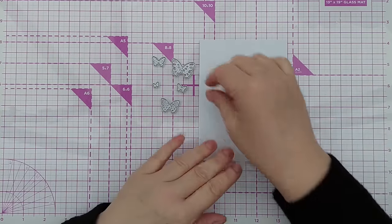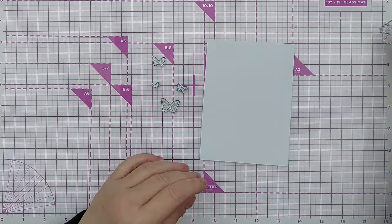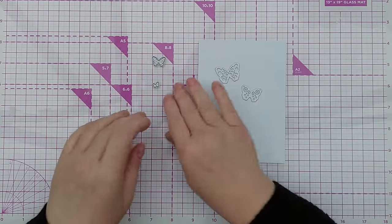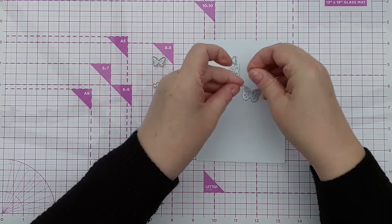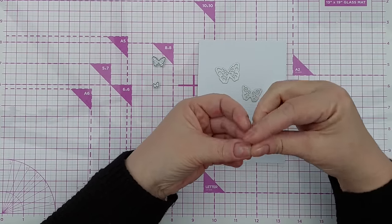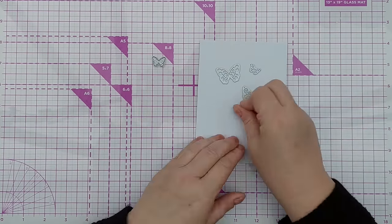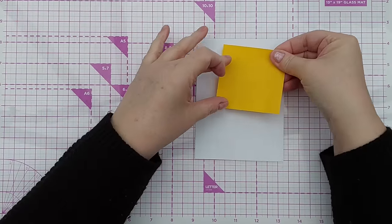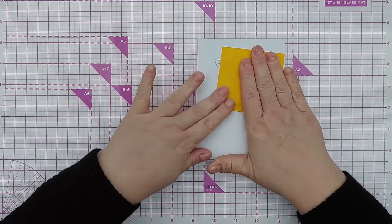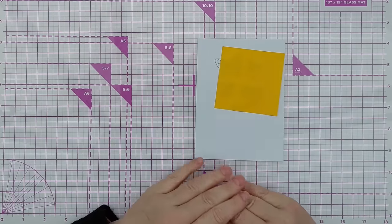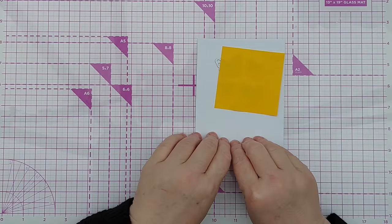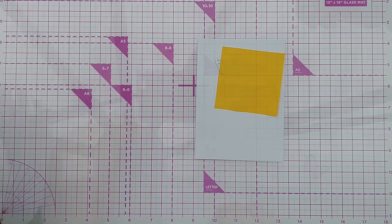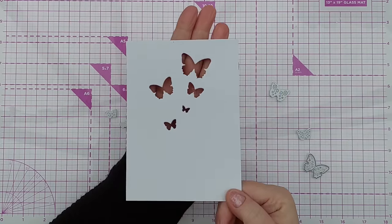So you take a card panel and you take your individual dies, these just happen to be butterflies. You place them on in the arrangement you want, the right way up. You can hold them in place with something sticky like a post-it note or some low-tack tape, something that's not going to damage your card front when it's run through the die cutting machine.